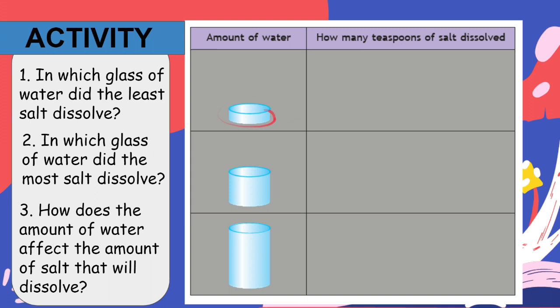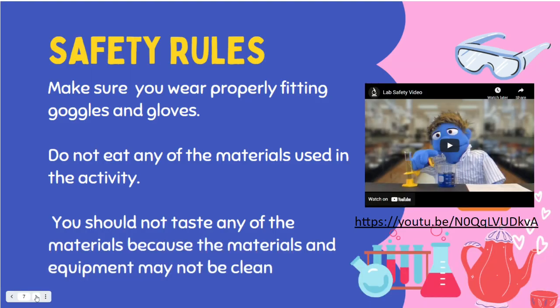Using transparent cups or glasses will make it easier for you to see whether the salt has dissolved. You could put dark colored paper underneath the transparent cups to make it easier to see any undissolved salt. Make sure to record the number of teaspoons of salt that completely dissolve — this will be one half less than the total number of half teaspoons you put into the cup.